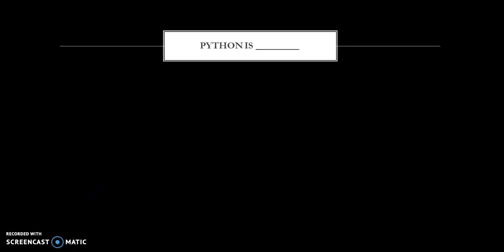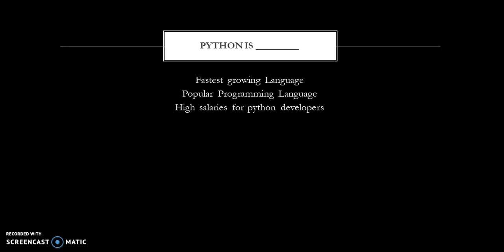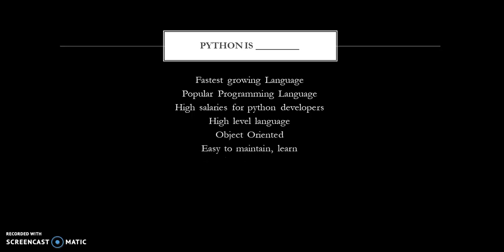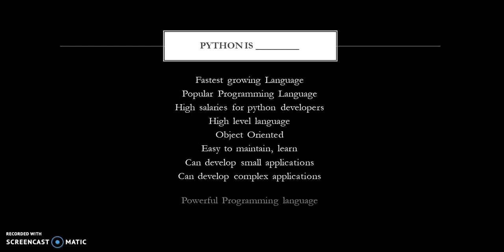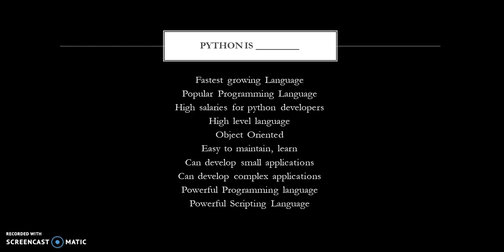So what is Python? We know programming languages like C and Java. All the things that are applicable to those programming languages will be applicable to Python by default. Python is the fastest growing language, the most popular language, and Python developers are paid high salaries. Python is a high-level language, object-oriented language, easy to maintain, and easy to learn. We can develop from small applications to complex applications. Python is a powerful programming language and a powerful scripting language.